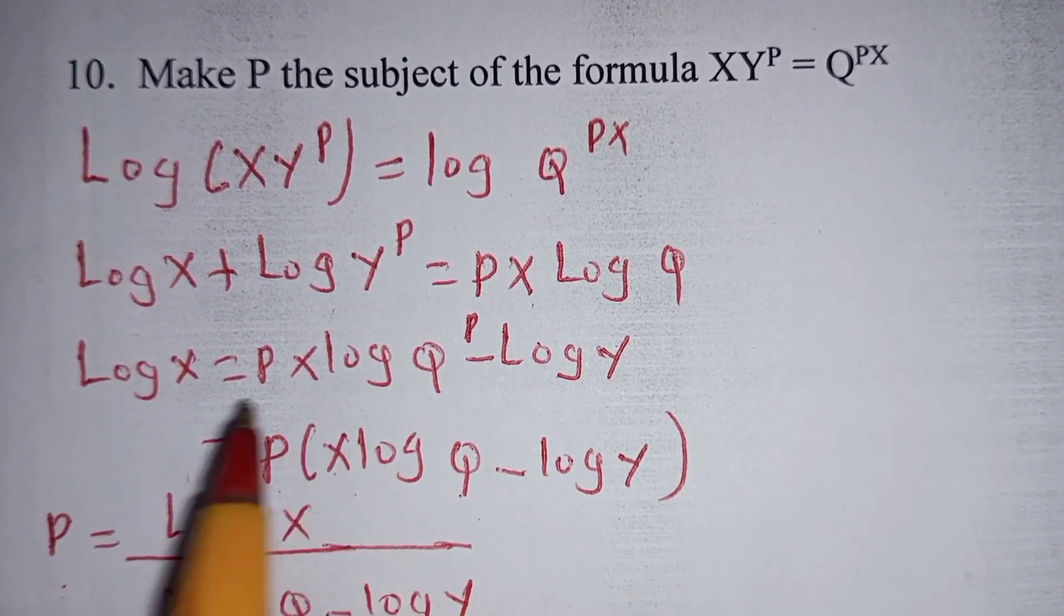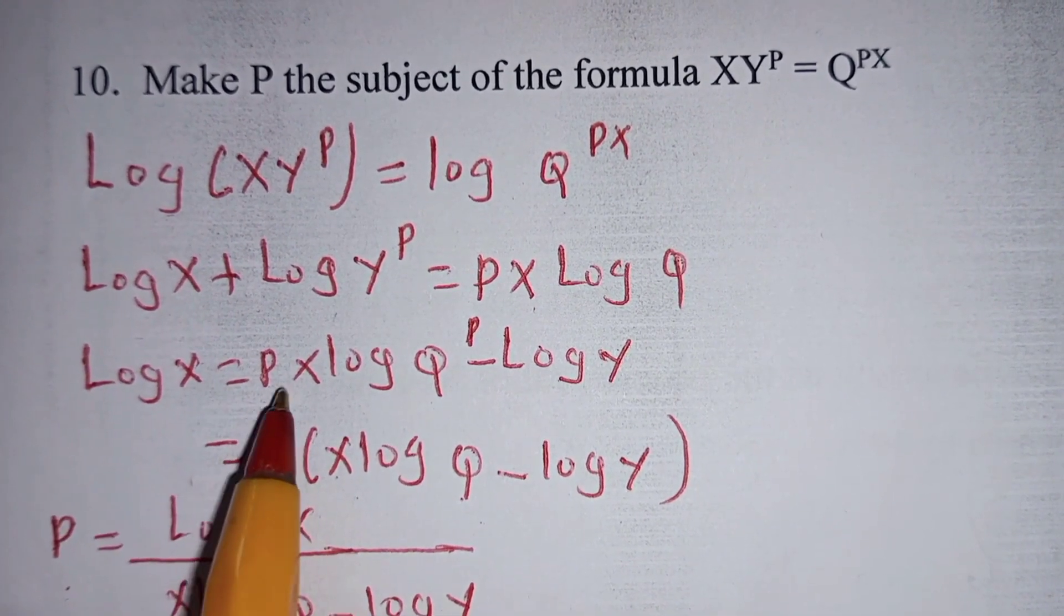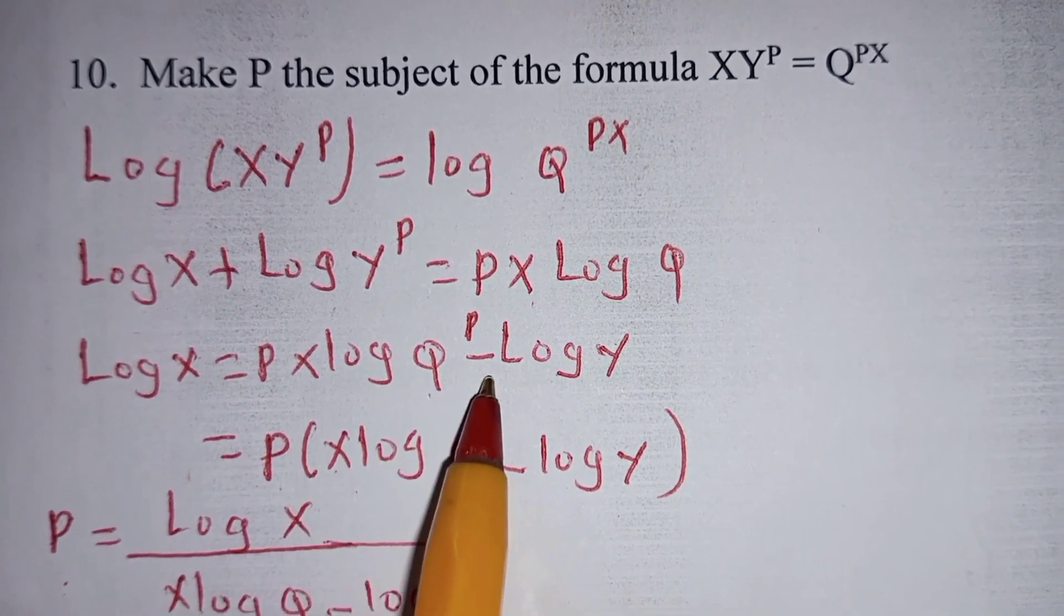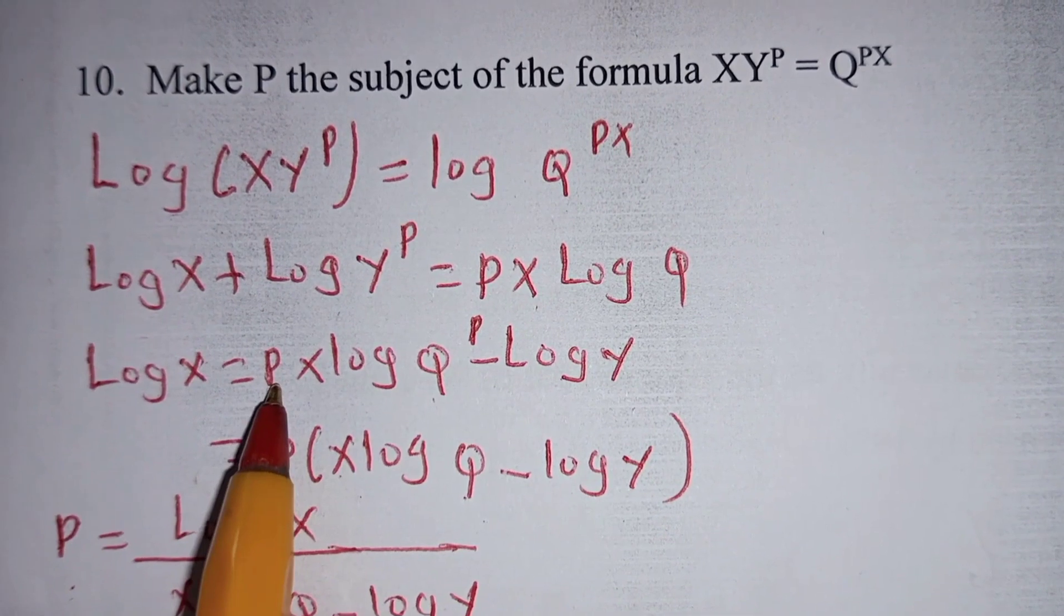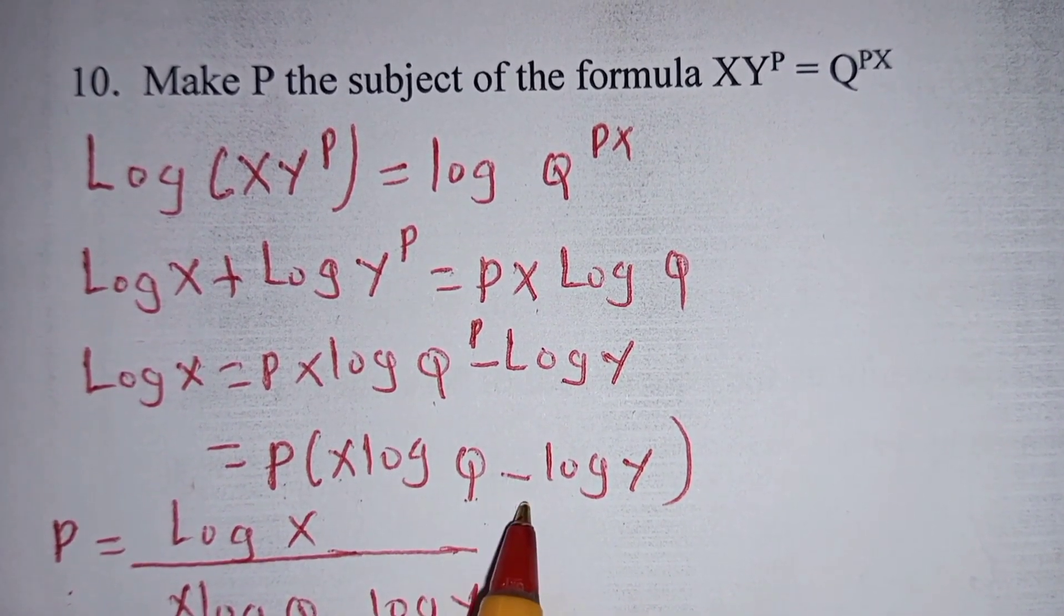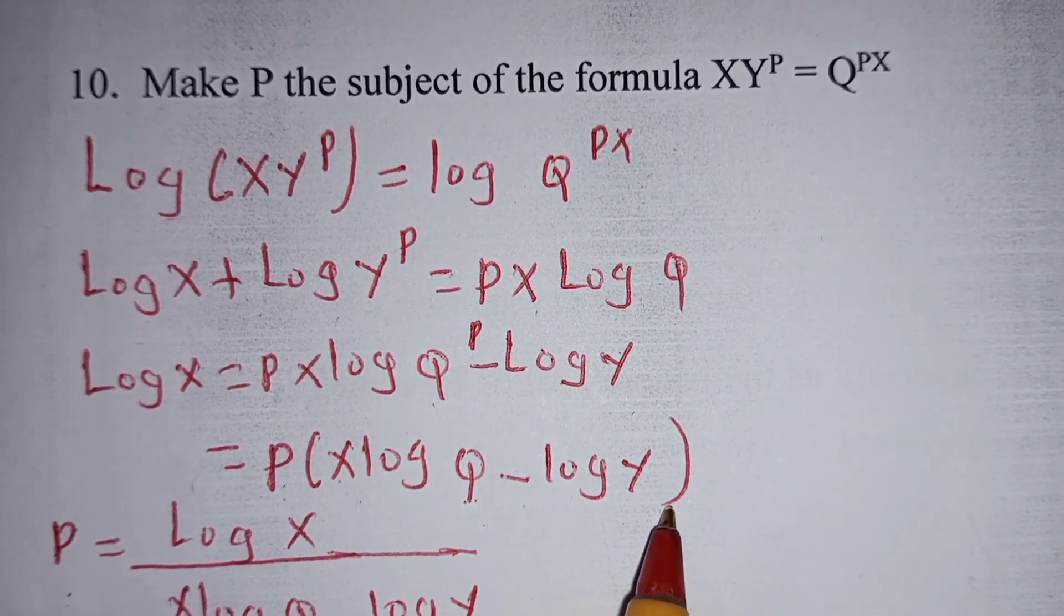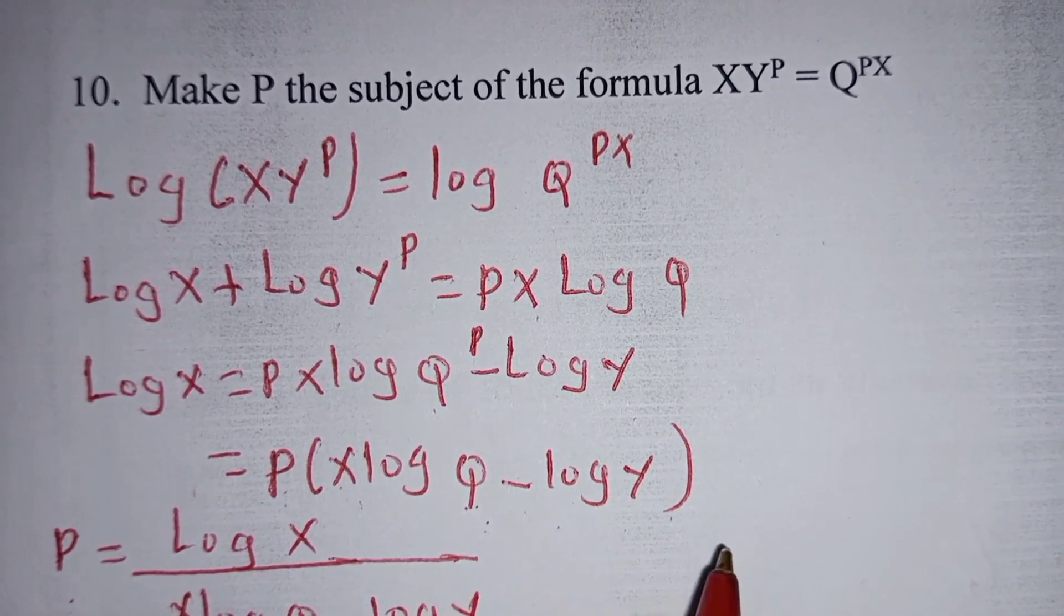Then you collect the terms together. Log X is equal to PX log of Q minus P log of Y. Then you factor P outside so that you have P into bracket X log of Q minus log of Y. Then you divide both sides by X log of Q minus log of Y.